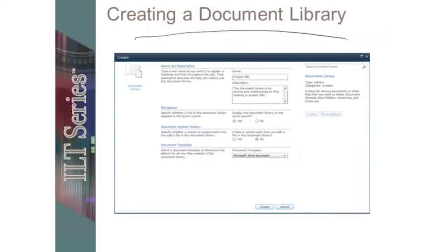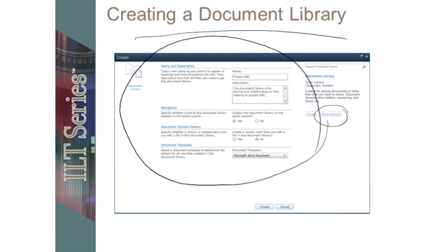Creating a document library. When you create a new document library, you will have the opportunity to choose more options. When you choose more options, you have an opportunity to name the library — very important. The very first name you give a new document library is forever its URL name. What that means is that it should avoid spaces, it should be lower case, and it should be relevant without being too specific, because the initial URL can never, ever be changed again.